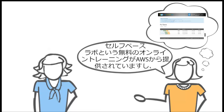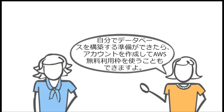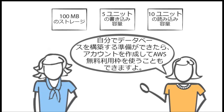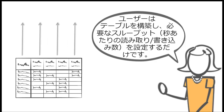How do I get started? AWS provides free online training with a self-paced lab to get you started, and plenty of online documentation. You can even sign up and use the AWS free tier when you're ready to start building your own databases. Then all you have to do is build a table and set the throughput — the number of reads and writes per second — that you want.